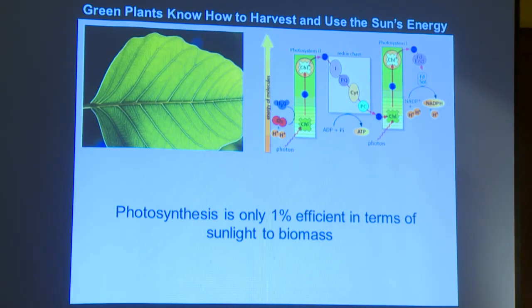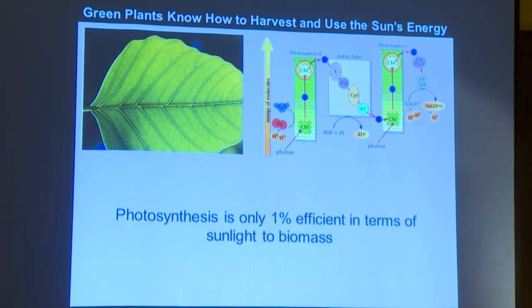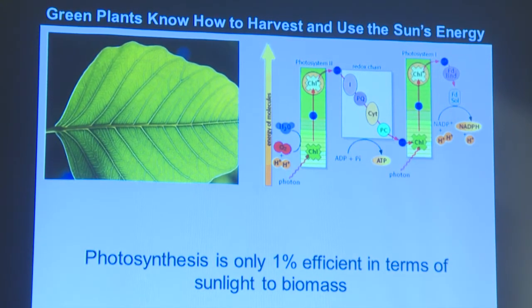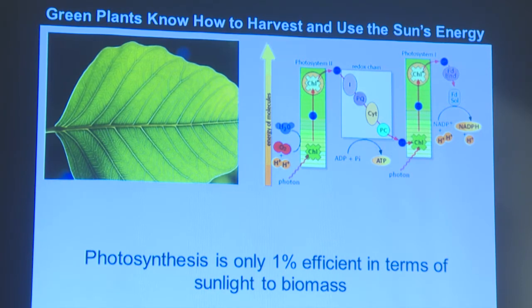Green plants are sort of most scientists' inspiration for how to use the sun. Green plants evolved over thousands or millions of years, a very elegant machinery for converting sunlight into useful things that the plant needs to live. The parts of the plant that make the plant green are called chlorophyll, and they are what absorbs the sunlight. There's two systems in the plant that absorb photons, photosystem 1 and photosystem 2. In photosystem 2, the plant converts water into oxygen that we breathe. And in photosystem 1, CO2 is converted into sugar. So photosynthesis is really the ultimate inspiration for how to use sunlight. But one thing that most people don't appreciate is that it's actually really inefficient. It only converts about 1% of the total sunlight into biomass.